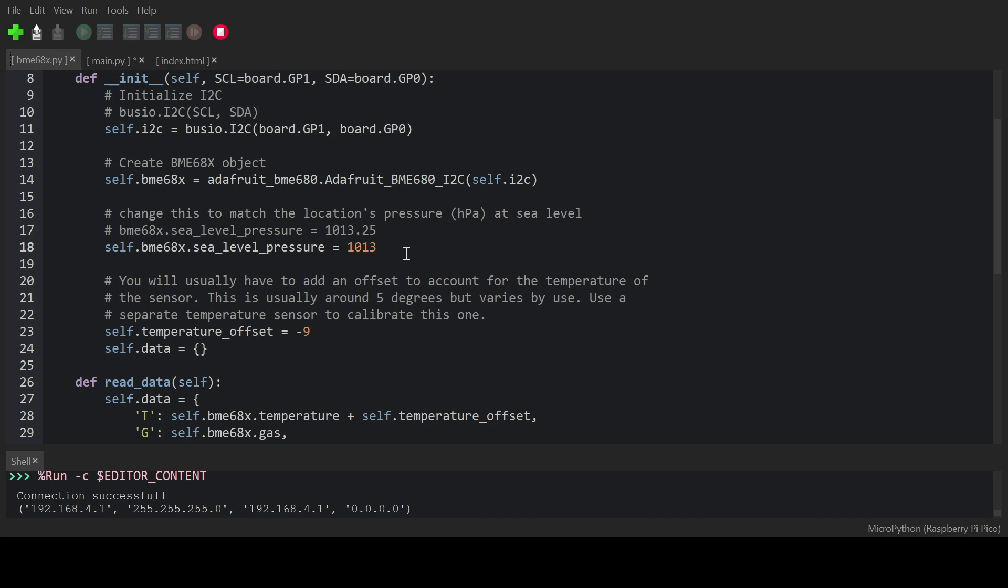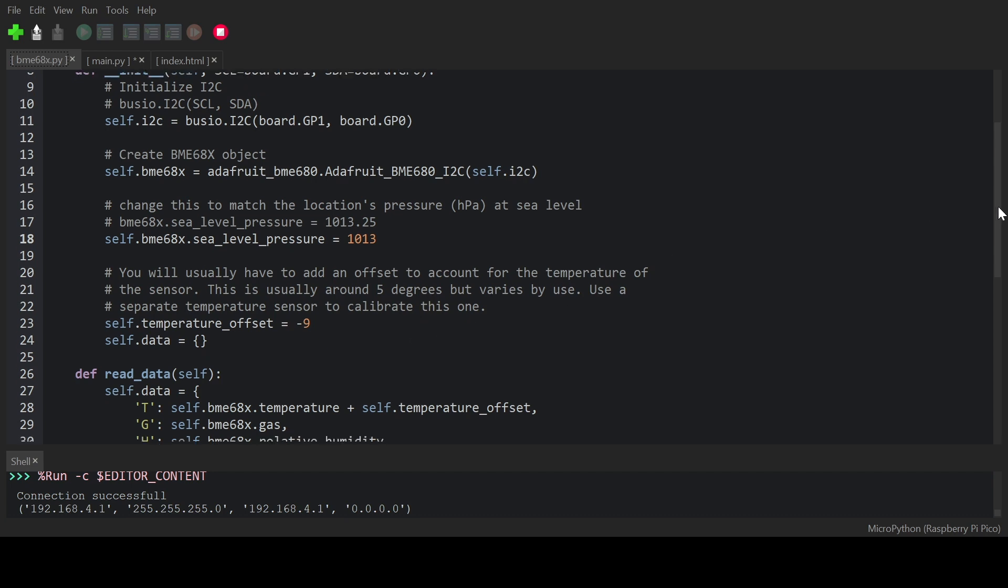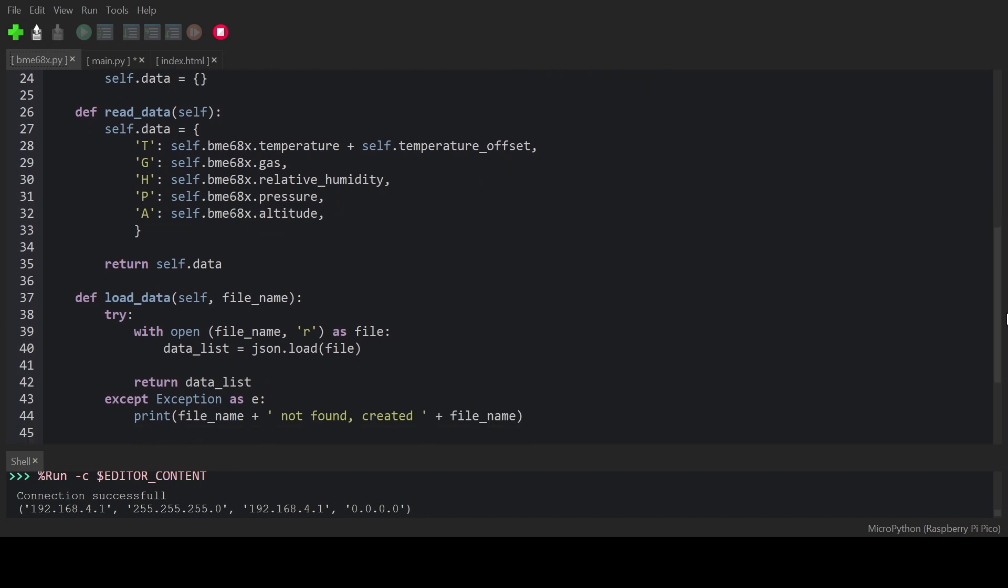The bme68x.py file contains the bme68x class that represents our sensor. You can manually set the bme68x sea level pressure and temperature offset properties in the constructor, so that you get correct altitude and temperature readings. The class also contains methods to read and save the data in a JSON file. That way you can download the data onto your PC and process it further.